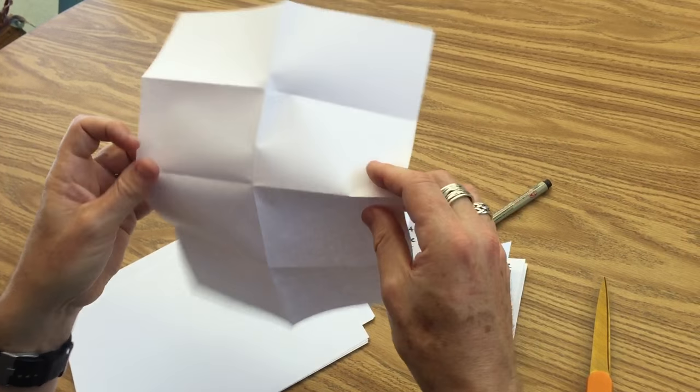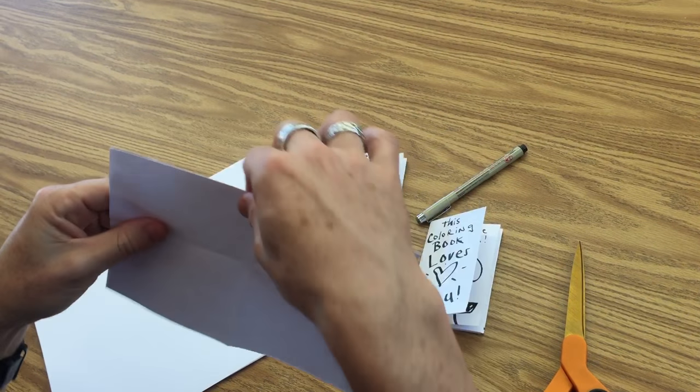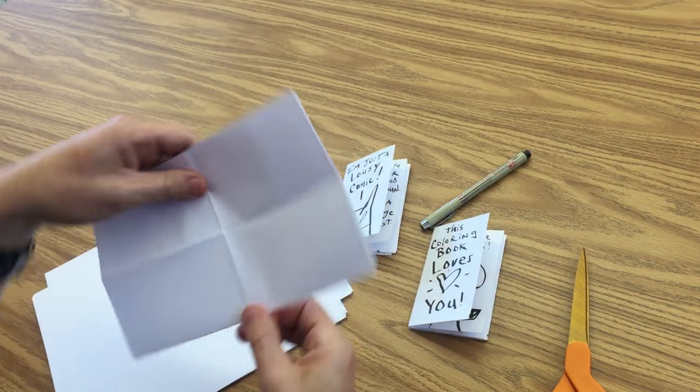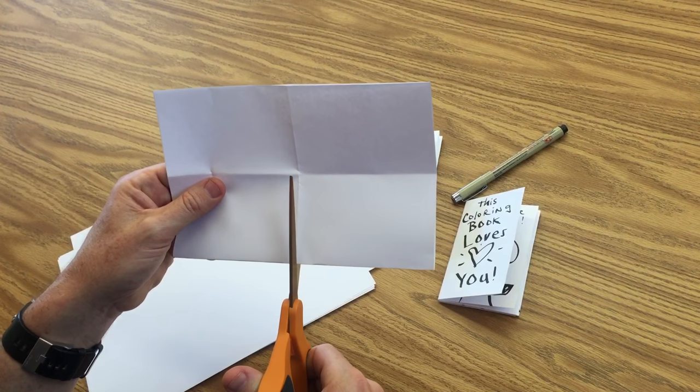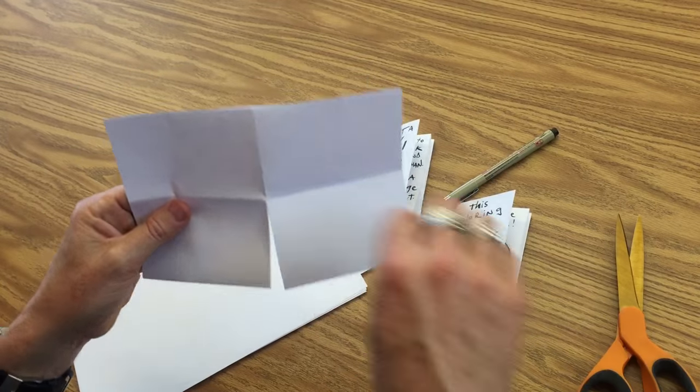We're going to take this and fold it in half the short way. And now I've got my hand holding the fold side. This is the open side. Bring that down there. Take your scissors and cut along that crease until you get to that horizontal fold there. Stop.